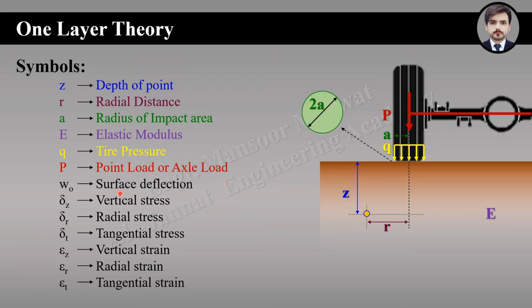w₀ represents the surface deflection. σ_z represents the vertical stress. σ_r and σ_t represent the radial and tangential stresses. ε_z, ε_r, and ε_t represent the vertical, radial, and tangential strains respectively.